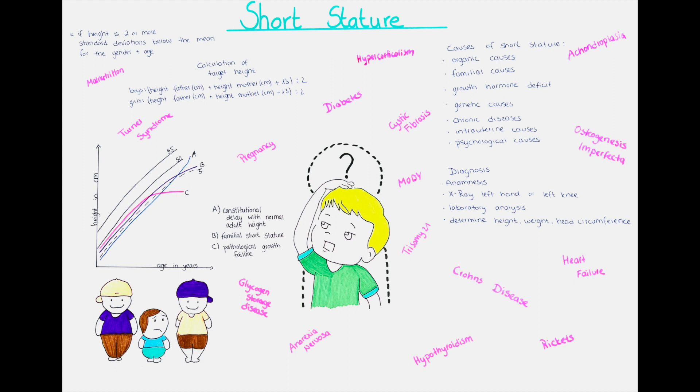The most numerous cause is chronic diseases. Those include diseases of different systems as Crohn's and celiac disease, which affect the gastrointestinal system, inborn defects of the heart or heart failure, chronic renal failure or renal tubular acidosis, type 1 diabetes mellitus, MODY and blood diseases. If you never have heard of MODY before you can watch our video on that in the pediatrics playlist if you like.